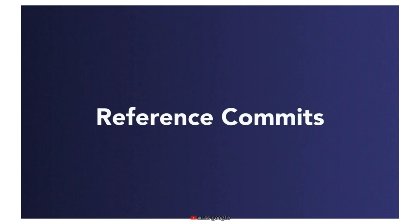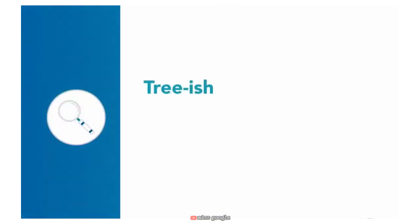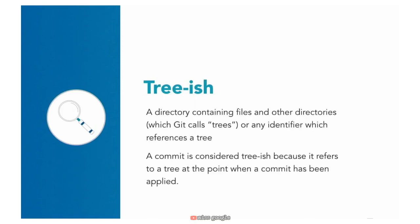We've covered a few basic ways to reference commits already, but there are others that are useful to know. We should begin by introducing a new concept called treeish. A tree in Git is a directory which contains files and other directories. If you drew a picture of the directory with many subdirectories, they would branch out and look like a tree. Git uses the term treeish to refer to both trees and to identifiers which reference a tree. A commit is considered treeish because it refers to a tree at the point when that commit has been applied.